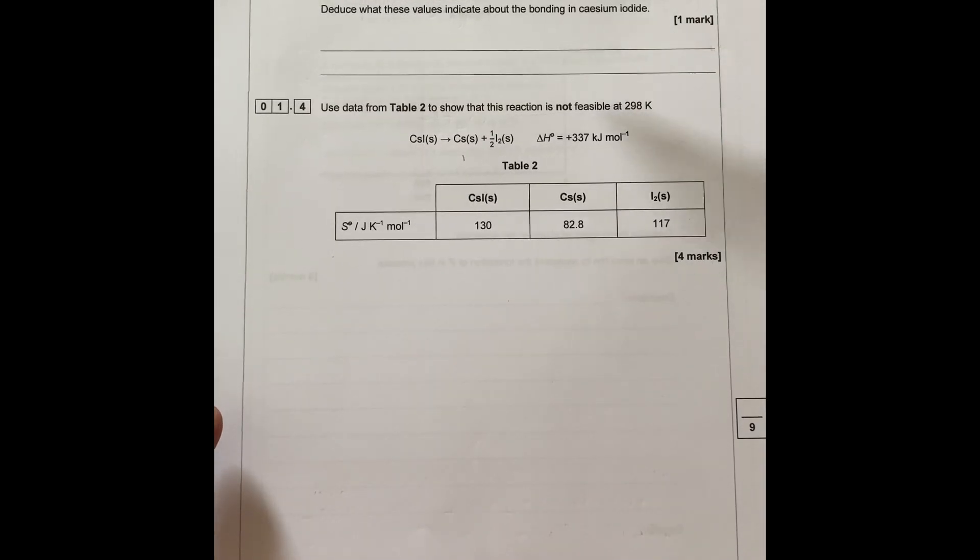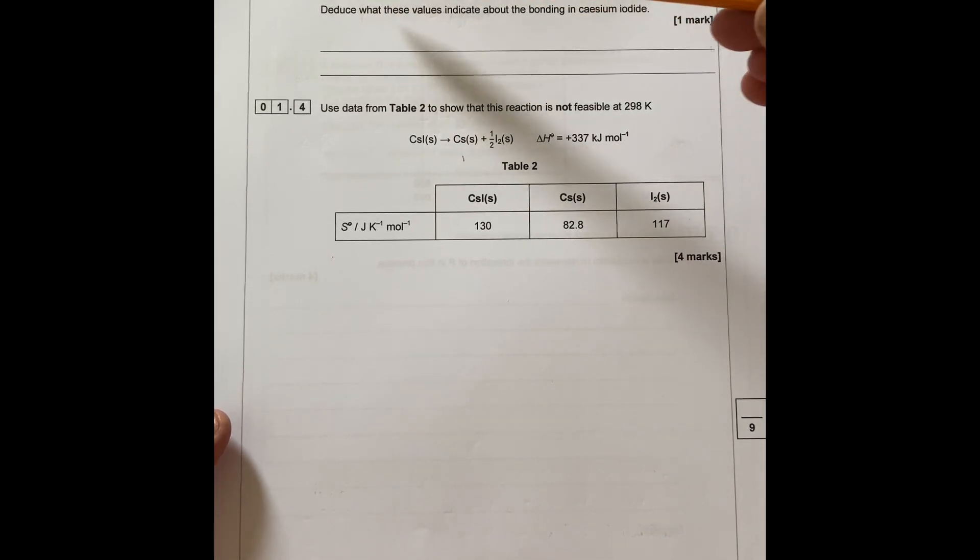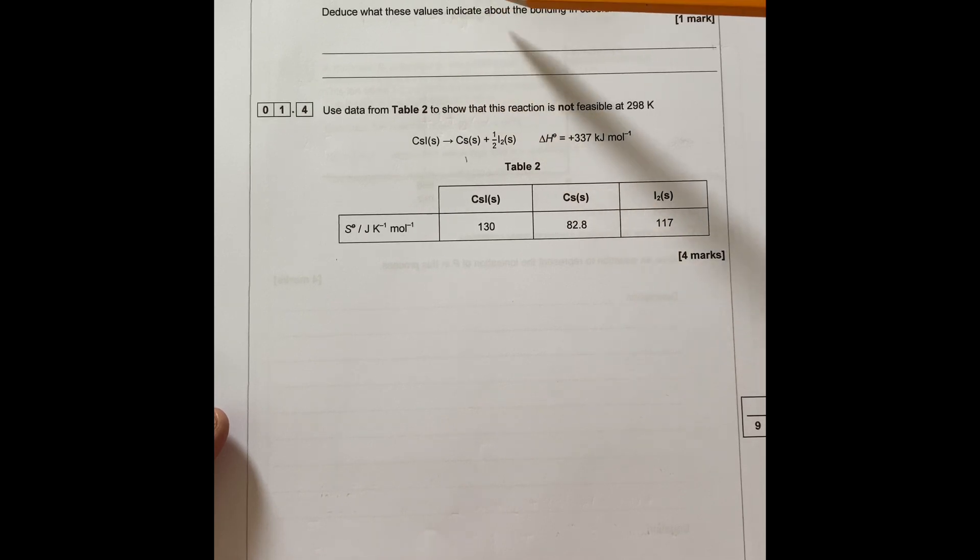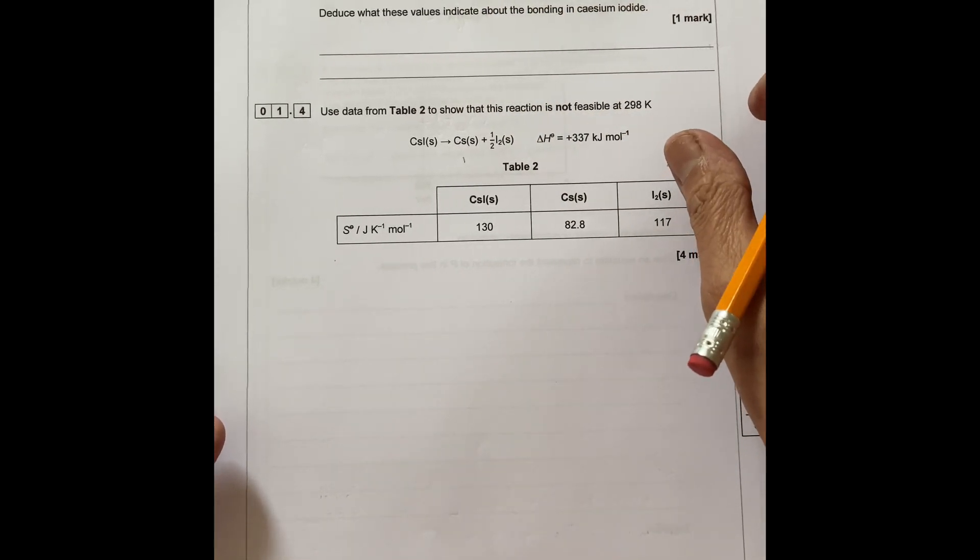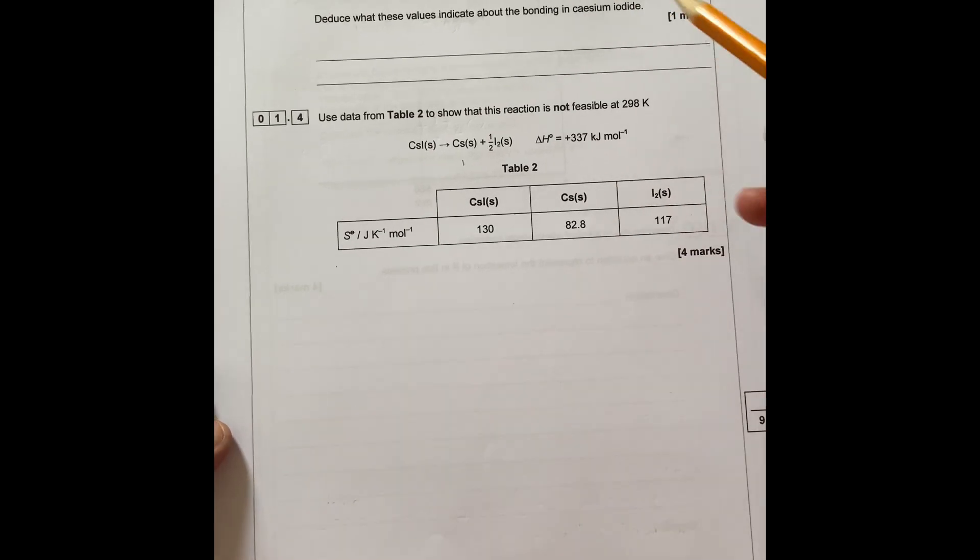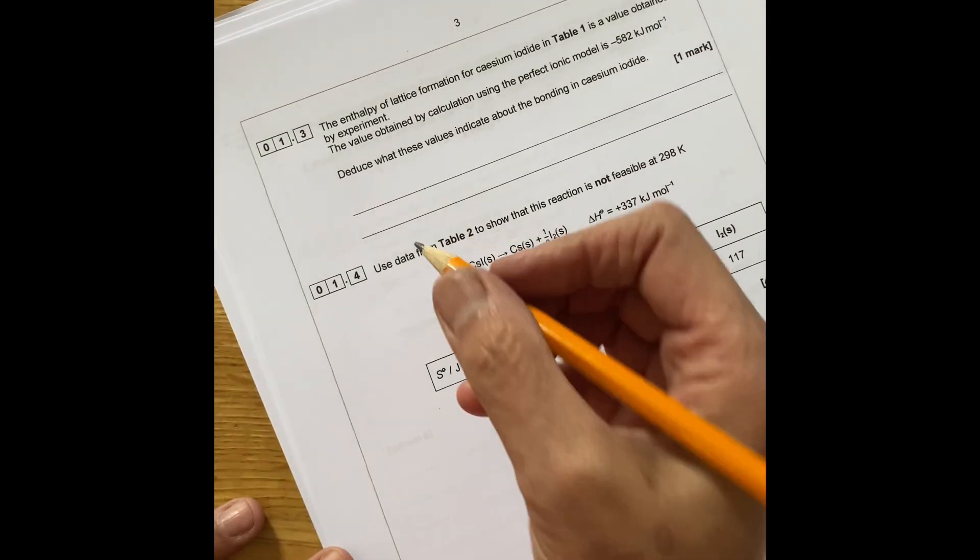Now the next question: enthalpy of lattice formation of cesium iodide in table 1 is a value obtained by experiment. The value obtained by calculation using the perfect ionic model is minus 582. So deduce what these values indicate about the bonding of cesium iodide.